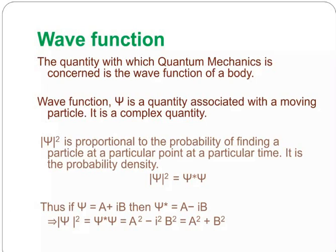What is wave function? The quantity with which quantum mechanics is concerned is the wave function of the body. The wave function psi is a quantity associated with a moving particle and it is a complex quantity. The modulus of psi squared is proportional to the probability of finding a particle at a particular point at a particular time. It is the probability density.